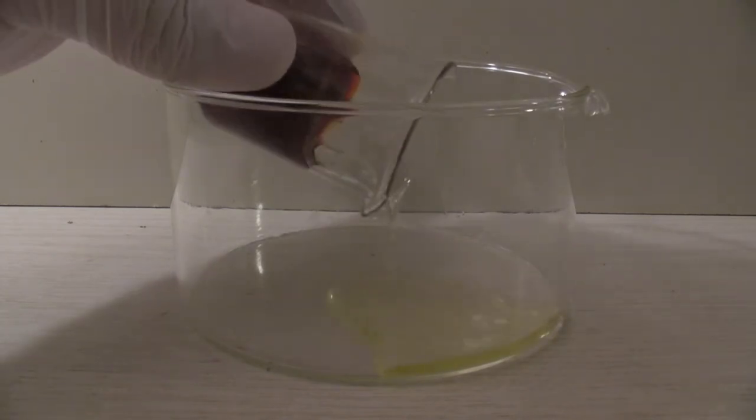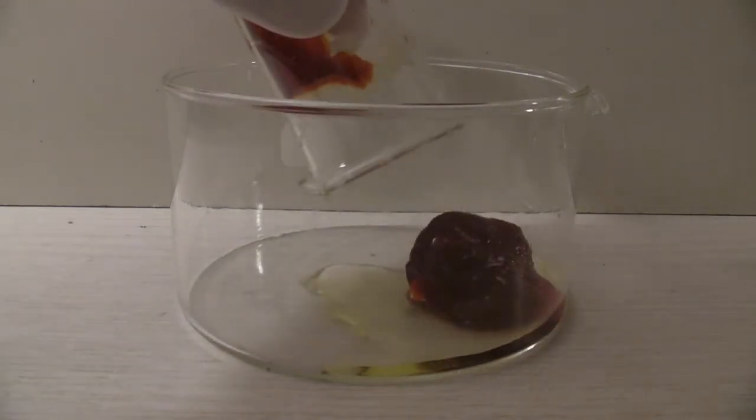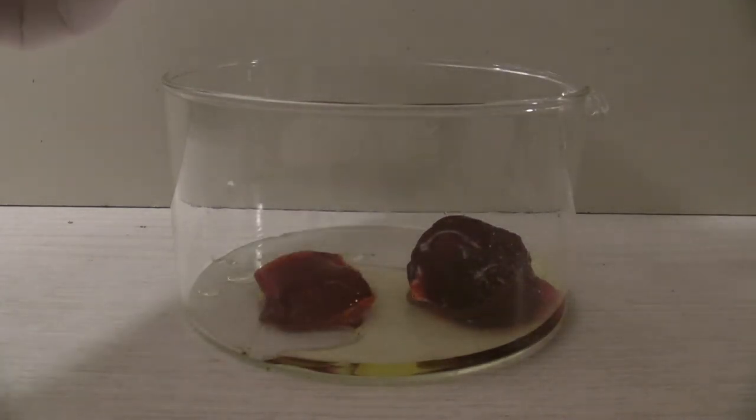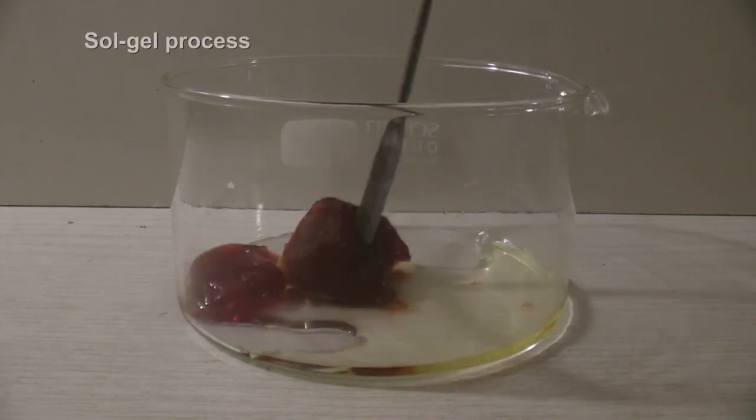Then the solid was carefully removed from the beaker with a spatula. The mass of vanadium pentoxide can be easily cut and could be used to make ammonium metavanadate again.